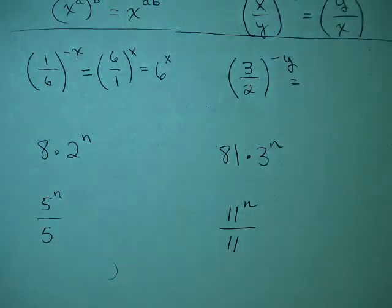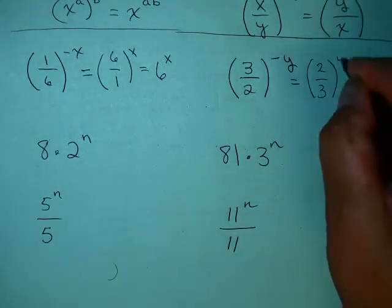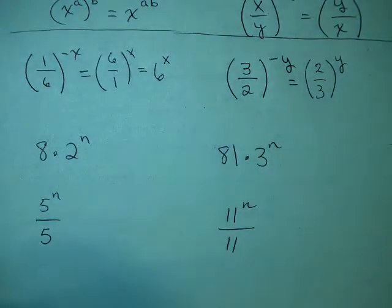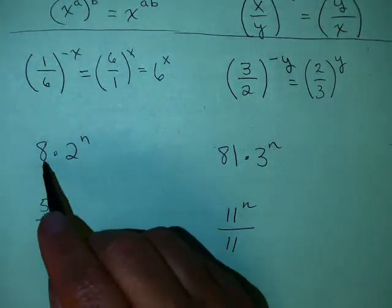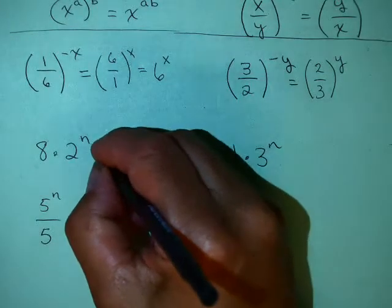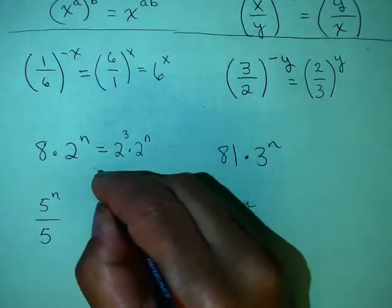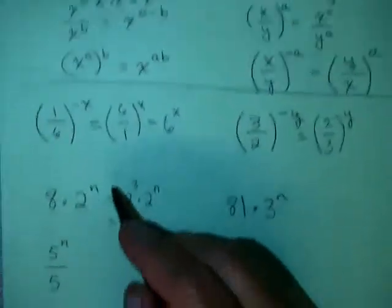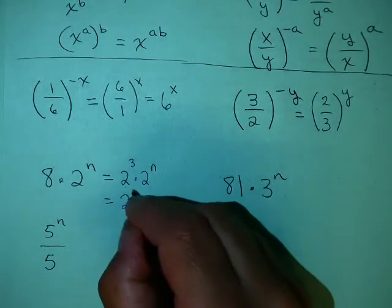Why don't you try this one on your own. This, of course, would be 2/3 to the y. You could write 2 to the y over 3 to the y, but that's not really necessary. 8 times 2 to the n looks fine the way it is, but there are some problems where they would like us to write that completely in powers of 2. So since 8 is 2 to the 3rd and this is 2 to the n, we add the exponents: 2 to the 3 plus n.